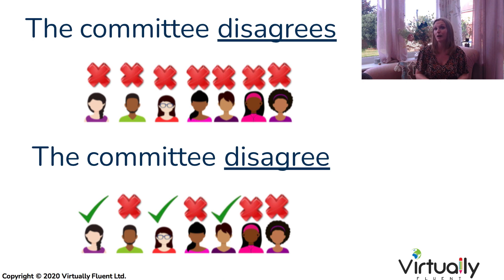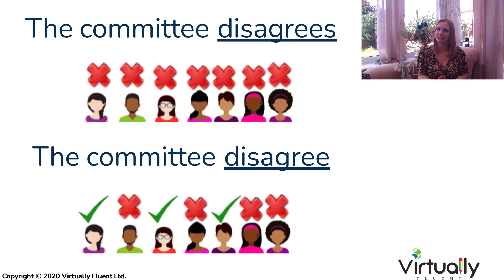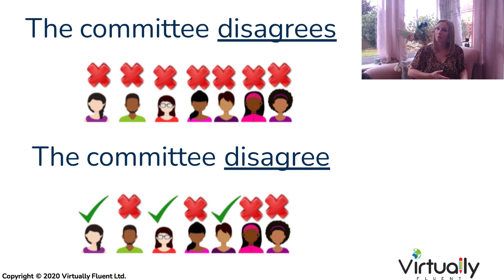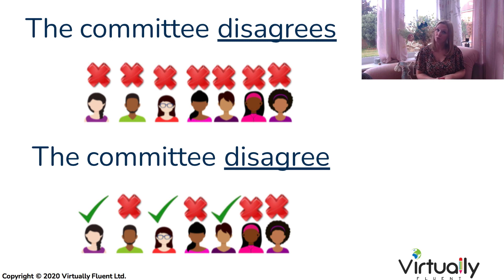It's also really important to note that when we use the singular form it must be unanimous — every single person or thing within that collective noun must be doing the same thing. We can also use this to understand exactly what the person is trying to say. For example, 'the committee disagrees' — singular form — tells me every person disagreed with this decision. However, 'the committee disagree' — plural form — suggests not everybody had the same opinion; it's not a unanimous decision. So we can use it to express more specific information in English.